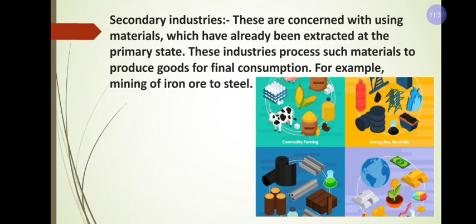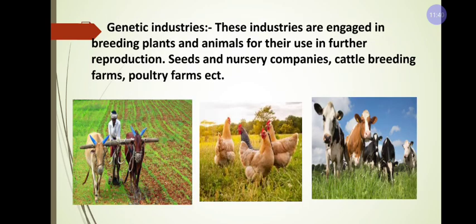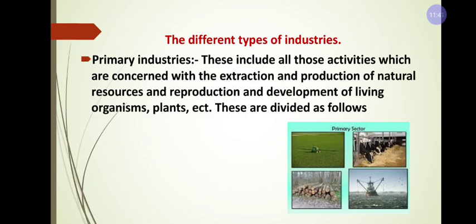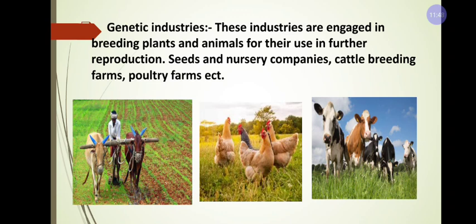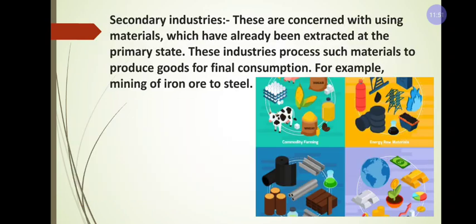We have now learned about primary industry, which has two types: extractive industry and genetic industry. In the next class I am going to explain secondary industry and tertiary industry. Thank you.